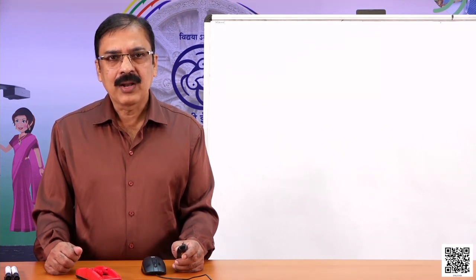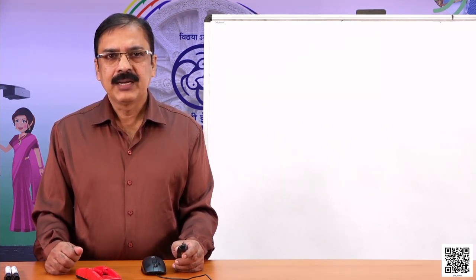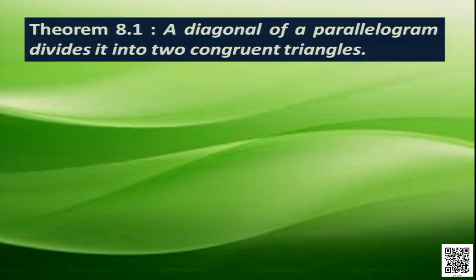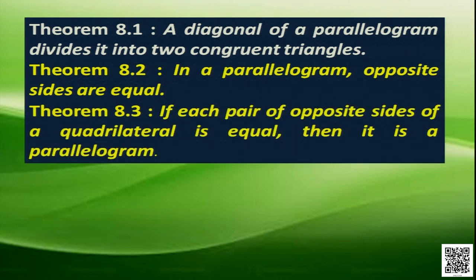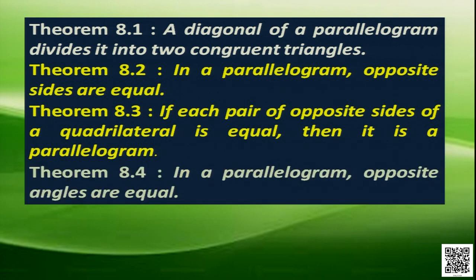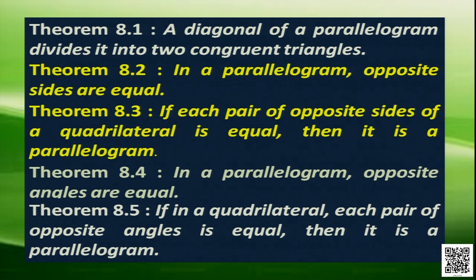A diagonal of a parallelogram divides it into two congruent triangles. Another property is, in a parallelogram, opposite sides are equal, and the converse says that if each pair of opposite sides of a quadrilateral is equal, then it is a parallelogram. Another property says in a parallelogram, opposite angles are equal, and its converse says that if each pair of opposite angles is equal, then it is a parallelogram.